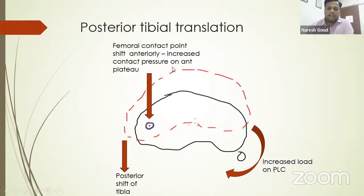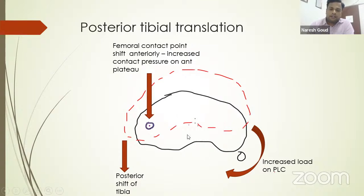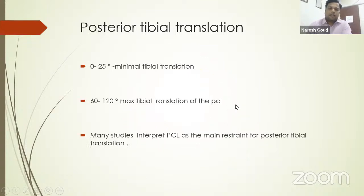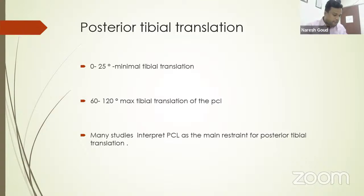To maintain the joint, medial rotation of the femur occurs, which can damage the anterior horn of the lateral meniscus. Posterior tibial translation is minimal between 0 and 25 degrees of flexion. At 60 to 120 degrees of tibial flexion, maximum tibial translation of the PCL occurs. This is why PCL is checked at 60 to 120 degrees — especially at 90 to 100 degrees of flexion, where there can be 10 mm of translation.